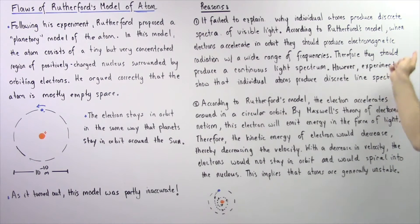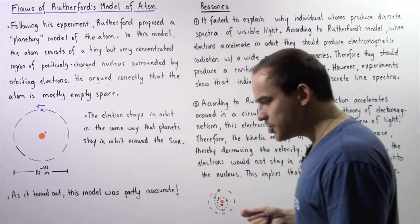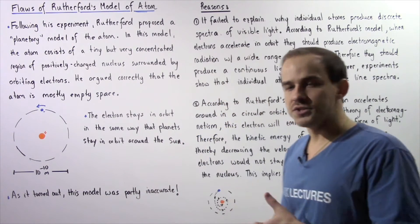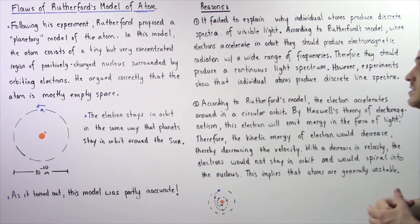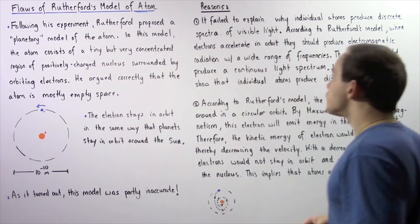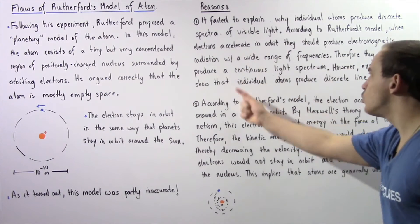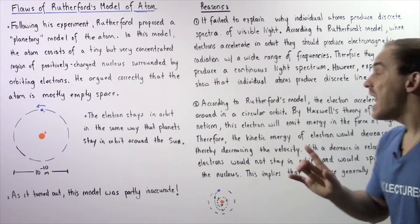they should produce electromagnetic radiation with a wide range of frequencies. And that basically means that individual atoms, according to this model, should produce continuous light spectra. However,